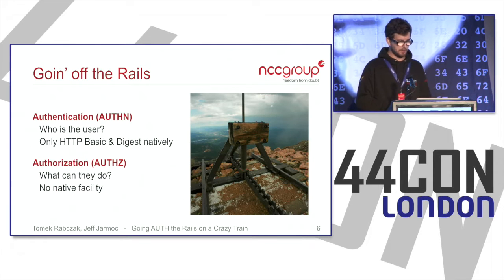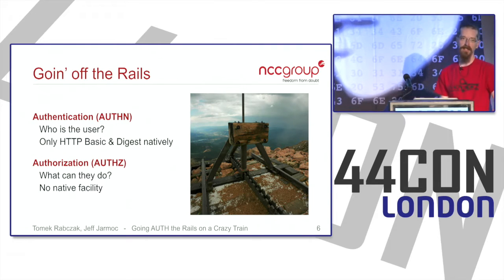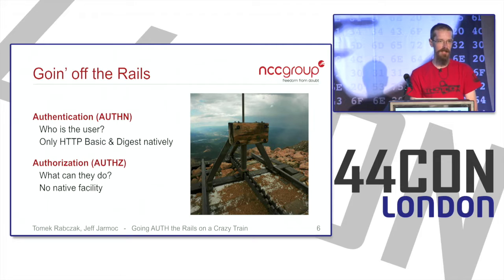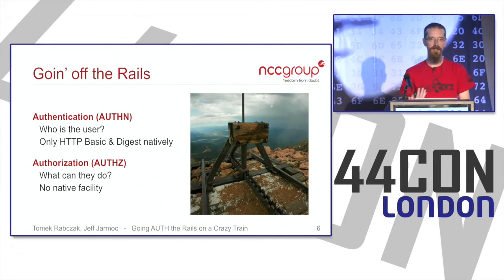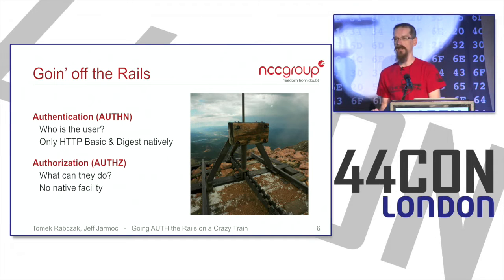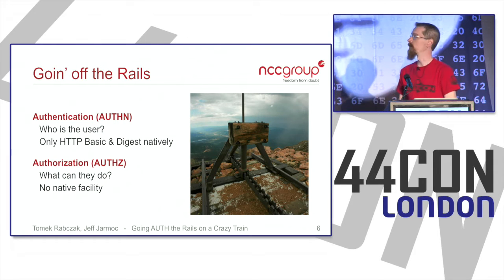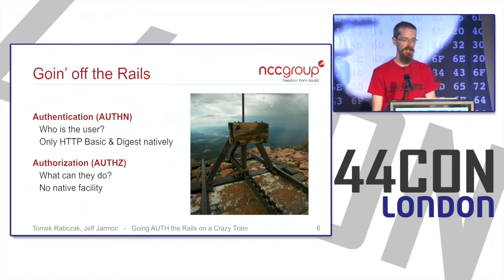Out of the box, Rails gives us a lot of protection for common security problems. It's not perfect, but usually a developer has to do something unusual to shoot themselves in the foot security-wise. One area that's different is authentication and authorization — there's much less capability out of the box despite most significant applications needing this functionality. This is where developers are left to their own devices to implement authentication and authorization.